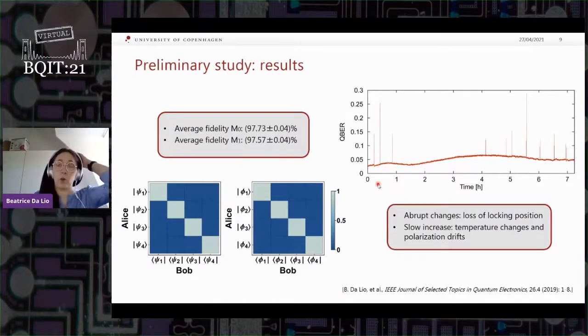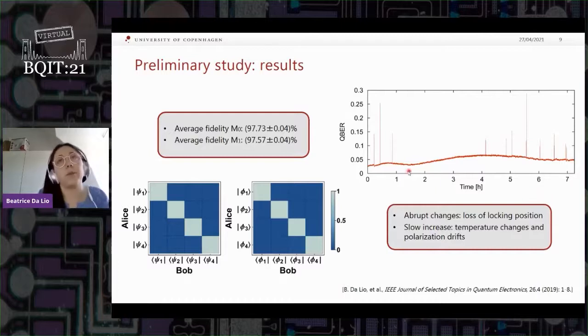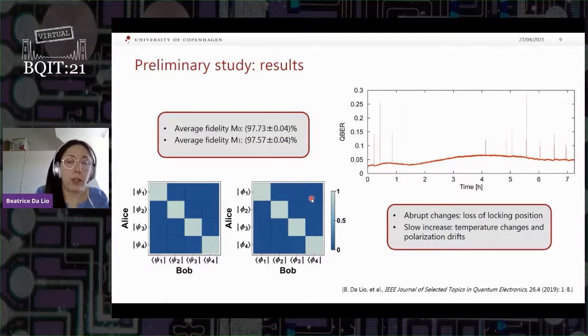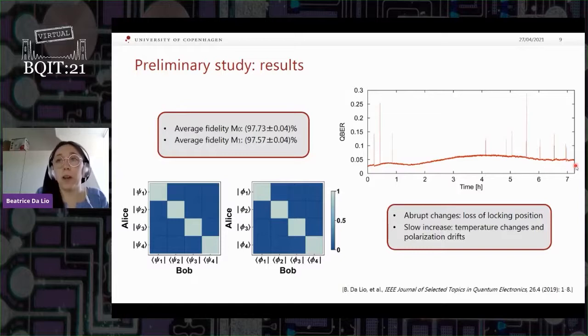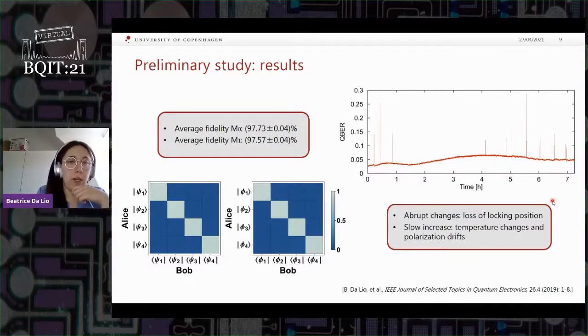On a much longer time scale, we want to show the stability. So we have here a plot that shows the stability over seven hours of what we call quantum bit error rate. So again, we choose one state, we prepare always that one and we project on all of the others. And then we count how many errors, so projections on the wrong states we have over all the number of clicks that we detect. And this is plotted here. So we have something maybe starting from 2.5 percent and going up to maybe something around five percent, with a slow increase in time. This is probably due to temperature changes and polarization drift, while these abrupt lines here are due to loss of the locking position by the phase lock loop board. But as you can see, the previous performance was very neatly recovered in a very short time.